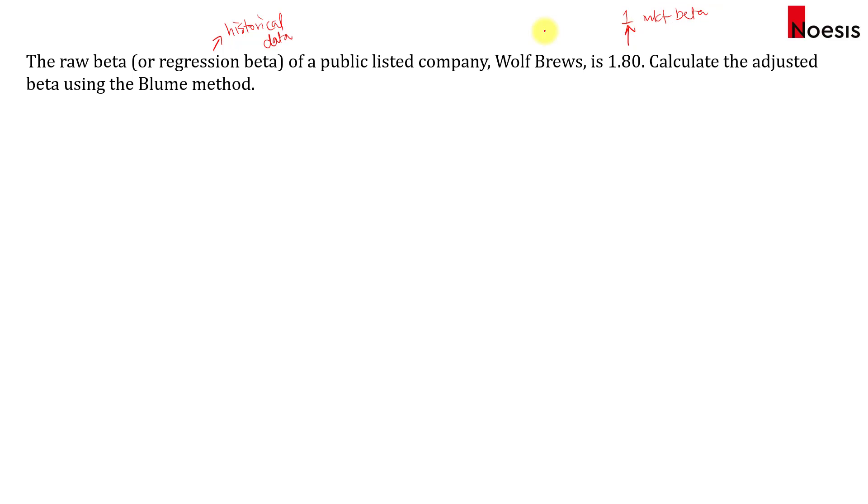So in this case, we have the raw beta or the regression beta of Wolf Brews, a public listed company, and the raw beta is 1.8. So let's say we want to calculate the adjusted beta using Blume's method.